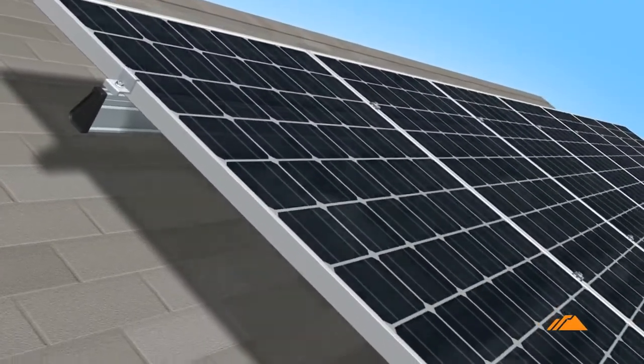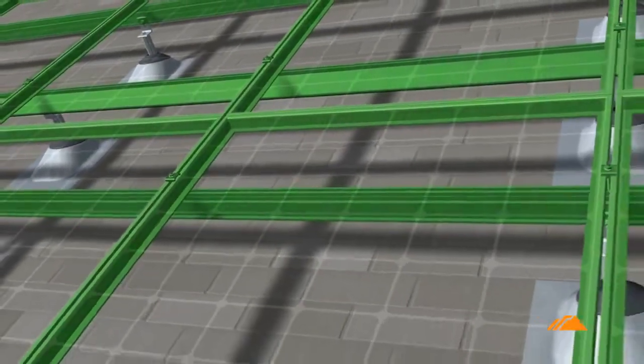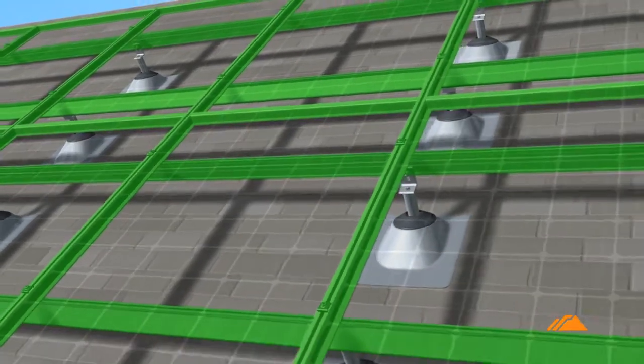Once installed, the Iron Ridge Integrated Grounding System provides complete structural and electrical security for the lifetime of the solar array.